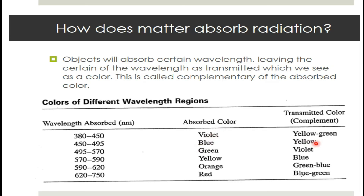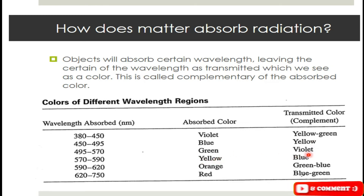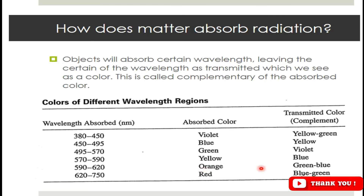Likewise, if the absorbed color is yellow, the complementary transmitted color is blue. For orange absorbed color the complementary color is blue-green, and for red it is blue-green. This is how electromagnetic radiation is absorbed by matter, and the color we see of objects is that of the transmitted or complementary color.